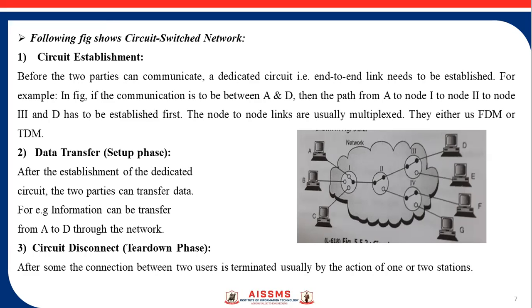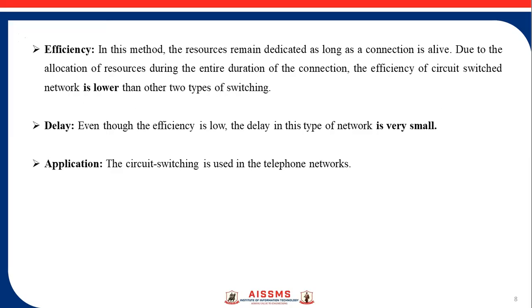The next phase is data transfer. After the establishment of the dedicated circuit, the two parties can transfer data. For example, information can be transferred from A to D through the network. The last phase is circuit disconnect, called the teardown phase. After some time, the connection between two users is terminated, usually by the action of one or both stations. This completes the circuit switched network.